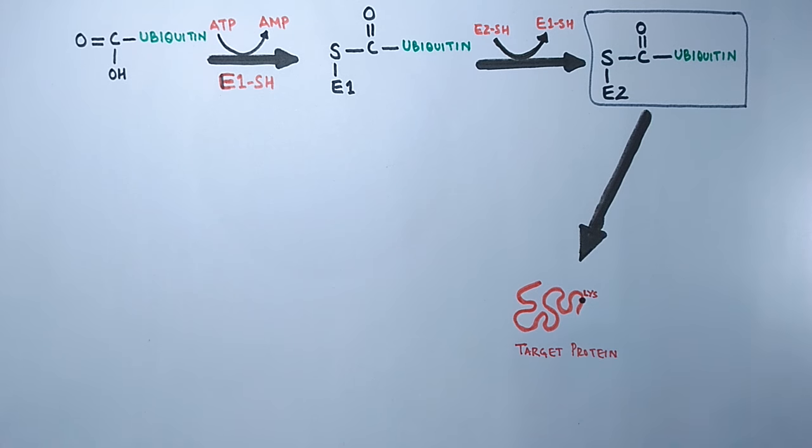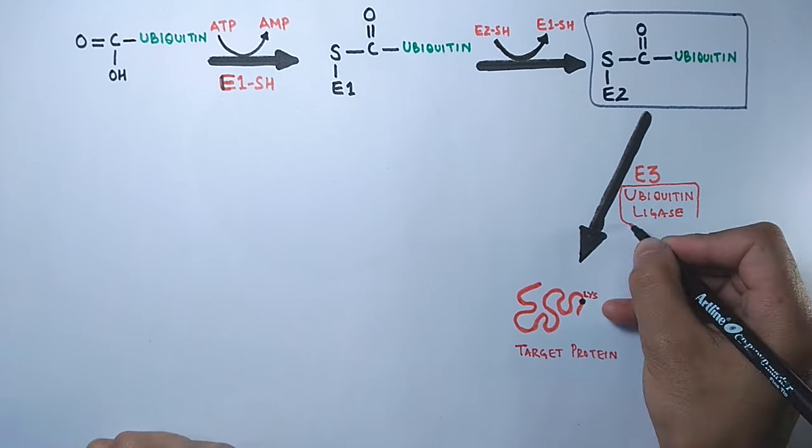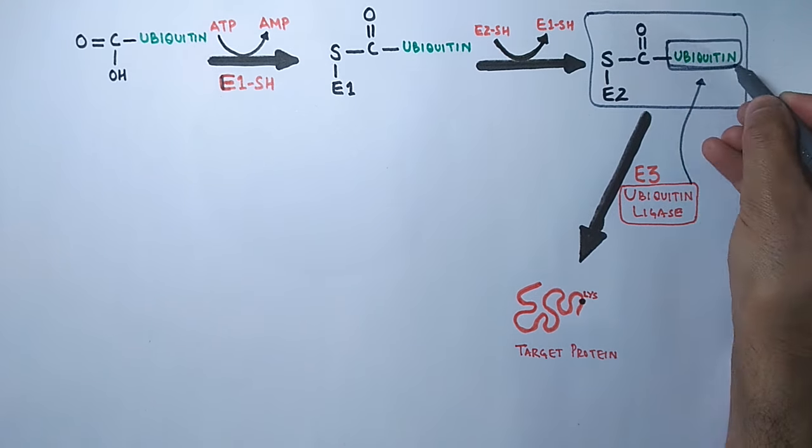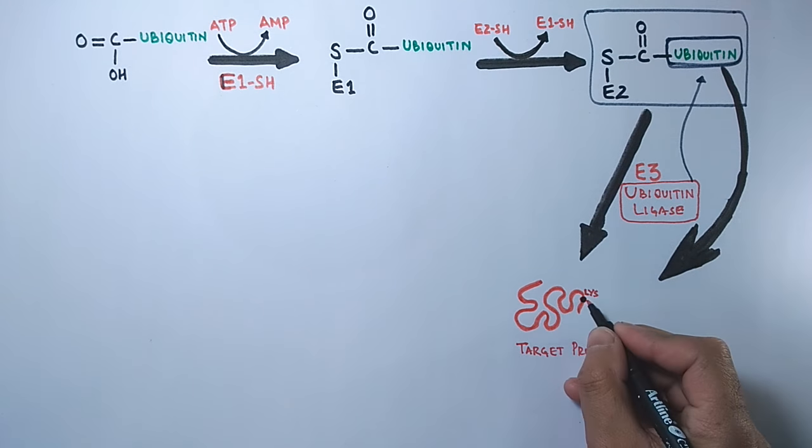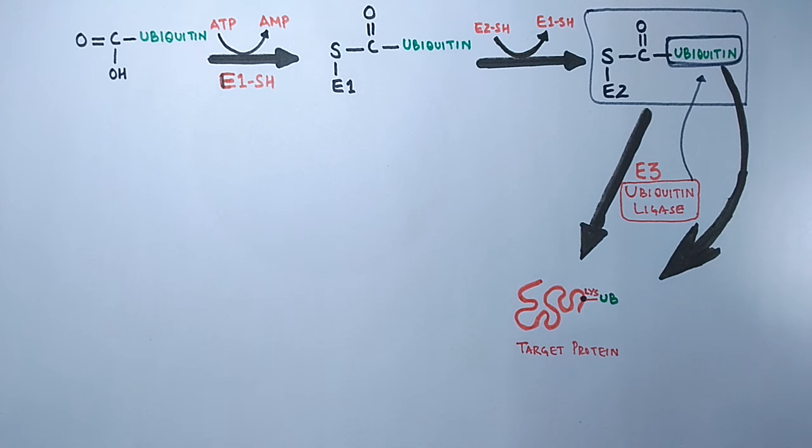So finally, the last enzyme E3, known as ubiquitin ligase, comes in and transfers the ubiquitin from E2 towards the lysine residue of target protein by forming the isopeptide bond between lysine and ubiquitin.